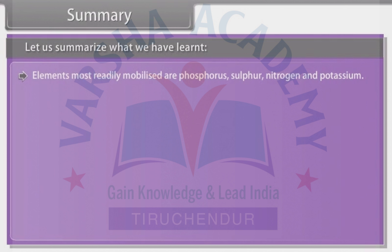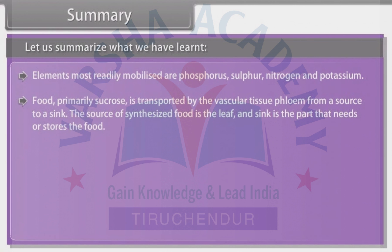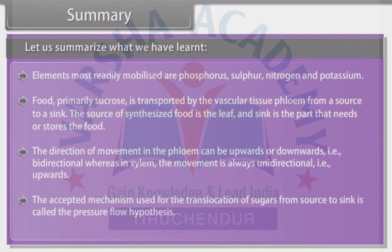Elements most readily mobilized are phosphorus, sulfur, nitrogen, and potassium. Food, primarily sucrose, is transported by the vascular tissue phloem from a source to a sink. The source of synthesized food is the leaf, and the sink is the part that needs or stores the food. The direction of movement in the phloem can be upwards or downwards, which is called bidirectional, whereas in xylem the movement is always unidirectional, which means upwards. The accepted mechanism used for the translocation of sugars from source to sink is called the pressure flow hypothesis.